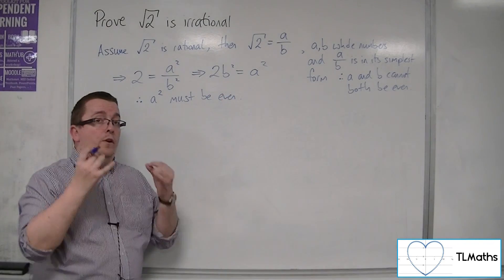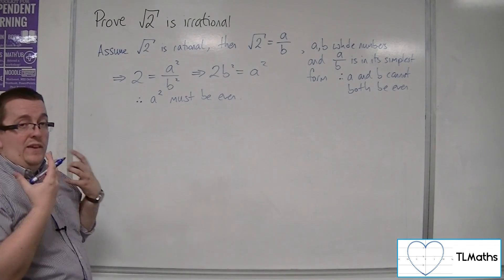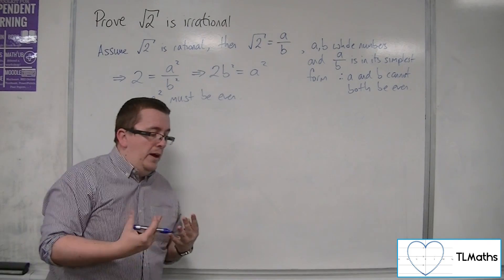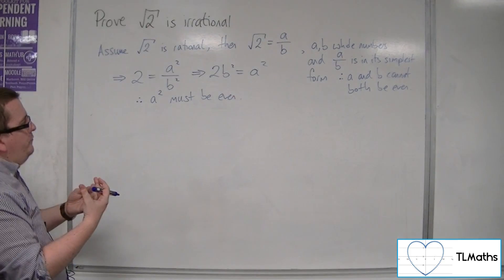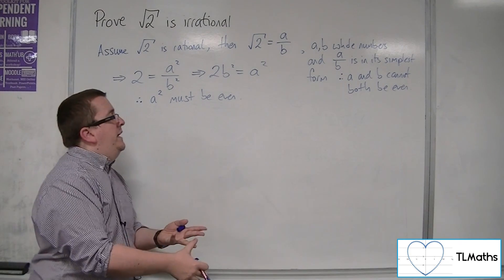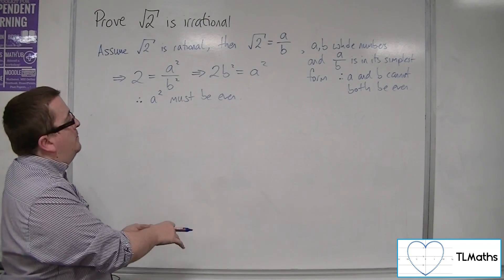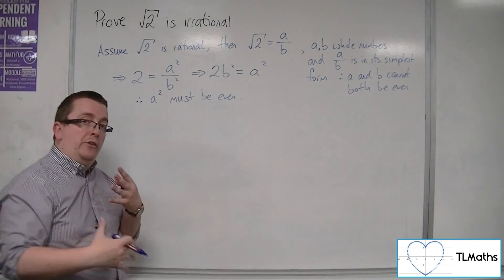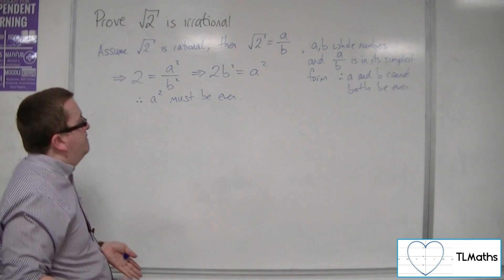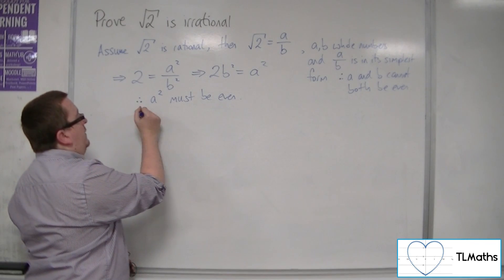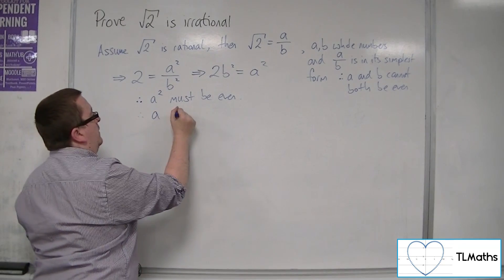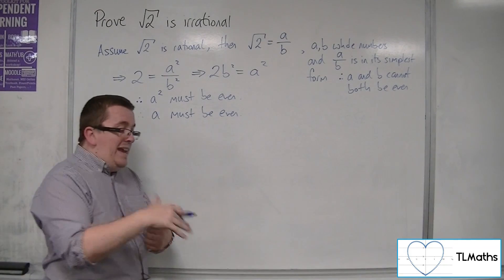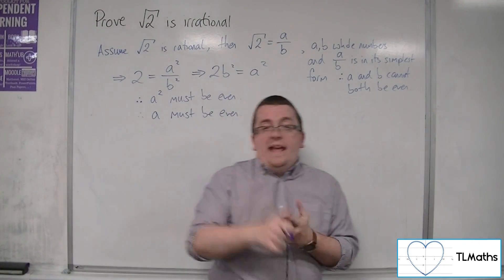Now, if a squared is even, then if we're thinking about 4, 16, every single square number that is even, the square root of that must also be even. So that must mean that a must also be even. So if a squared is even, a must be even.